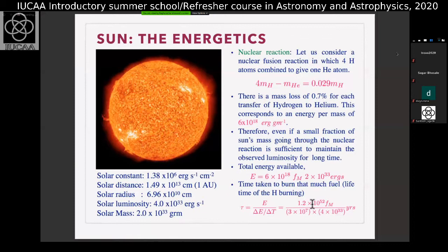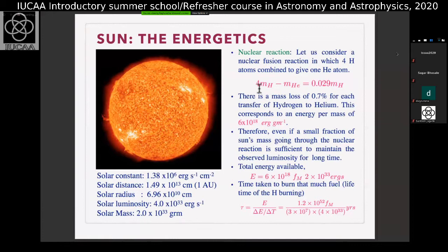So if you take fm = 0.1, you get the kind of lifetime of the Sun. The Sun can go through hydrogen burning — combining four hydrogen atoms to give one helium atom — involving only 10% of the mass, and it will last for the time the Sun has lasted. This looks like a plausible scenario. So how can I combine four hydrogen atoms to form a helium atom? You cannot do it in one go; you do it over a sequence of reactions.